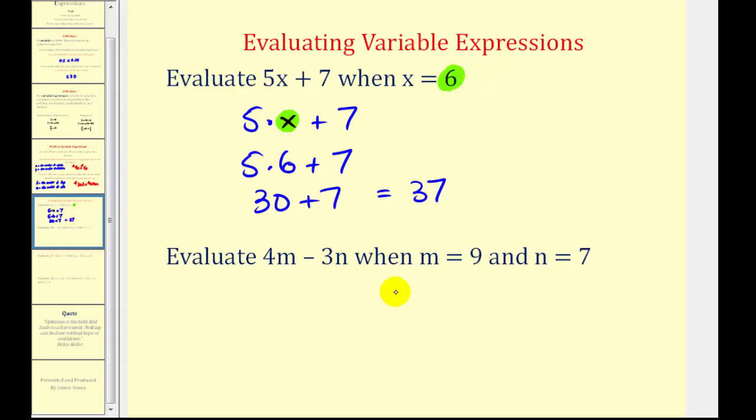Let's go ahead and try another one. Here we want to evaluate 4m minus 3n when m equals 9 and n equals 7. So this means 4 times m minus 3 times n. So we'll substitute 9 for m and 7 for n.